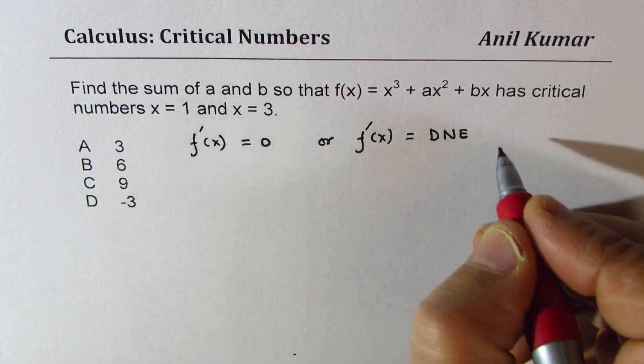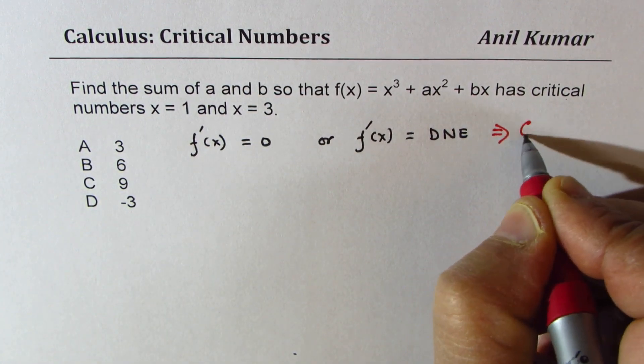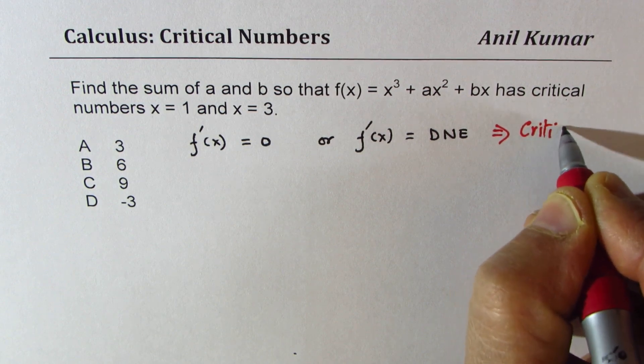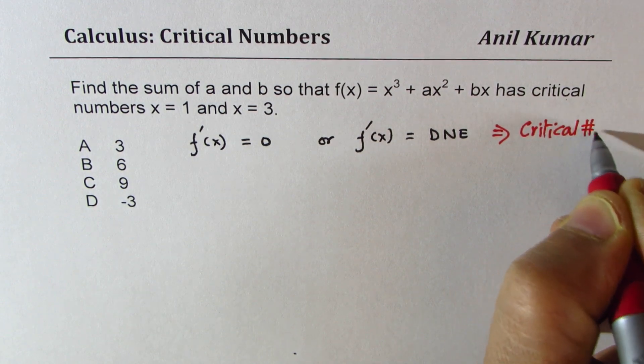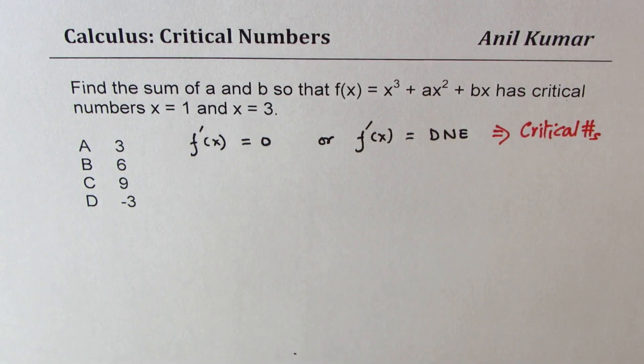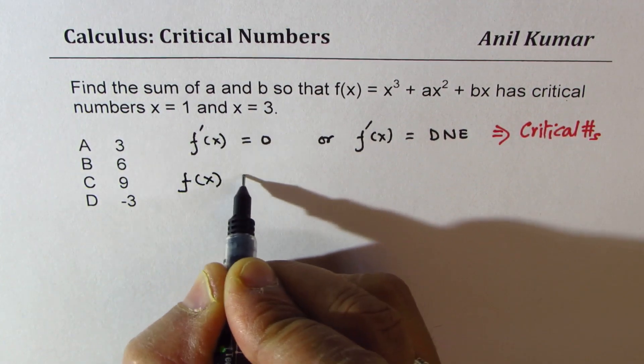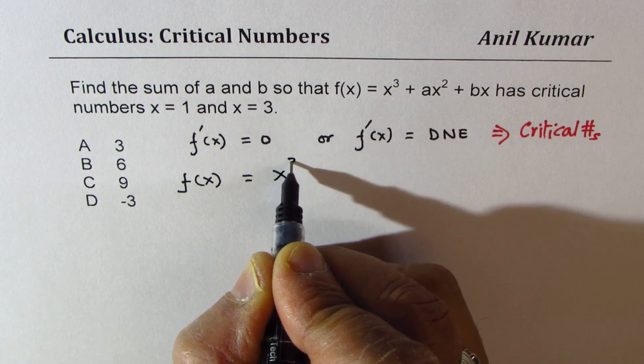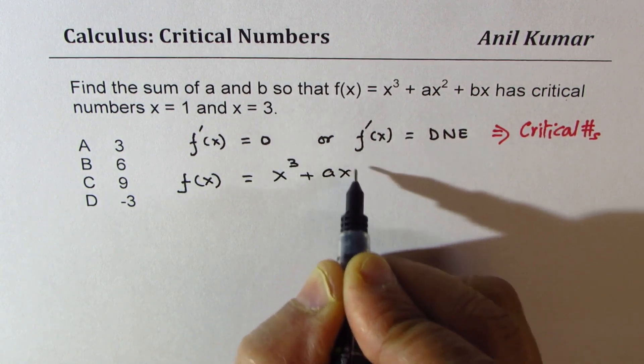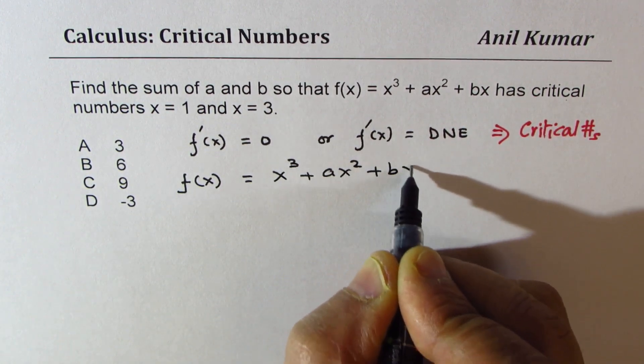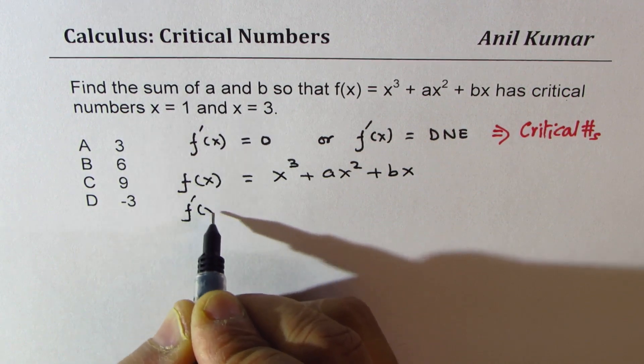Let's write down first: f(x) is x cubed plus ax squared plus bx. The derivative of this function is 3x squared plus 2ax plus b. So that becomes the derivative of the function.